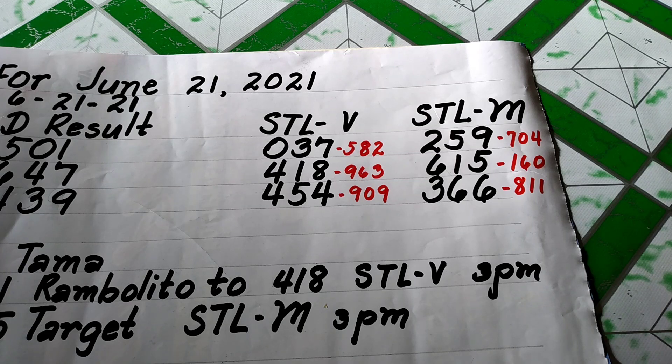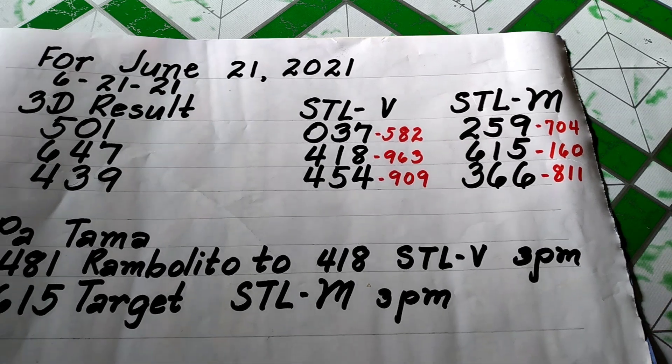Ang numerical equivalent ng 2-5-9 is 7-0-4, ang 6-1-5 naman ito ay 1-6-0, at saka ang numerical equivalent ng 3-6-6 is 8-1-1.